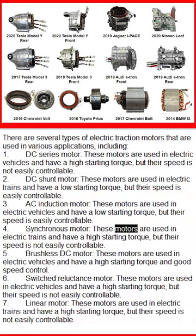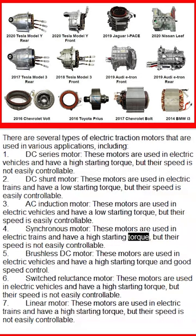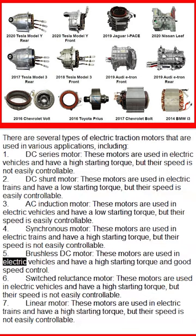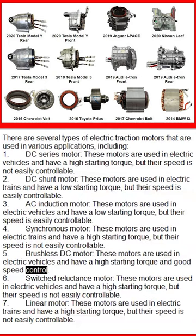Fourth, the synchronous motor: these motors are used in electric trains and have a high starting torque, but their speed is not easily controllable. Fifth, the brushless DC motor: these motors are used in electric vehicles and have a high starting torque and good speed control.